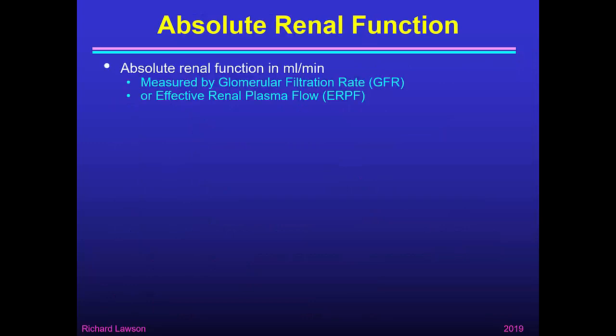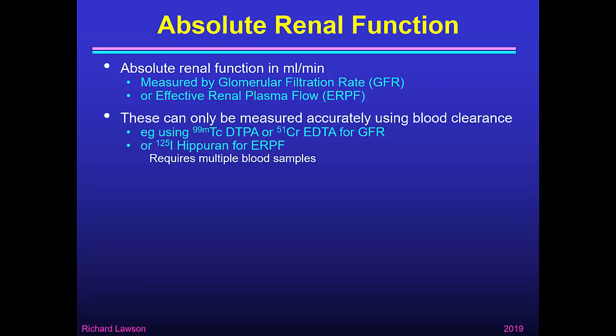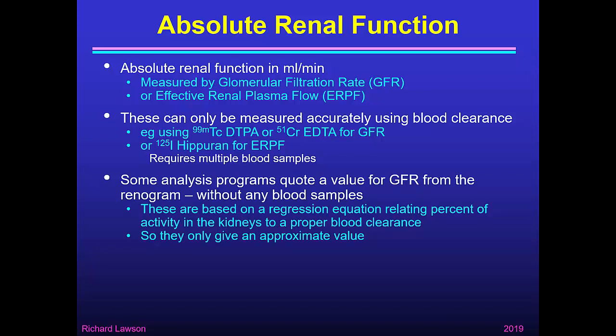Absolute renal function is measured in units of ml per min — either glomerular filtration rate (GFR) or effective renal plasma flow (ERPF). These can be measured accurately using blood clearance: in nuclear medicine we can use technetium-99m DTPA or chromium-51-EDTA for GFR, or I-125 labelled HIPURAN for ERPF. However, those techniques require multiple blood samples. Some analysis programs quote a value for GFR from the renogram without any blood samples, so how do they get an answer in ml per min without a blood sample?